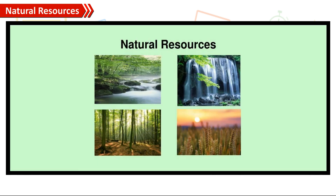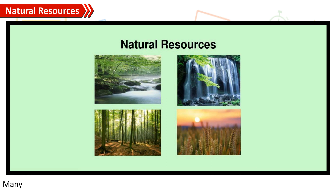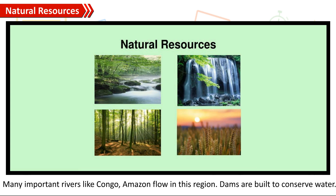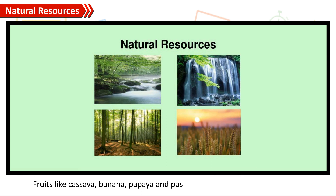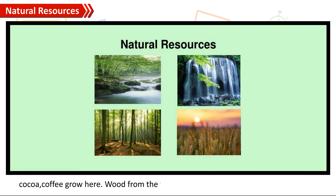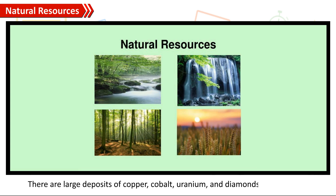The chief natural resources are water, forestry, and mineral resources. A majority of Africans depend on these resources for their livelihoods. Many important rivers like the Congo and Amazon flow in this region; dams are built to conserve water and produce electricity. The forest provides varieties of fruits and nuts, including cassava, banana, papaya, passion fruits, Brazil nuts, okua, and coffee. Wood from the forests is used to make furniture, for shipbuilding, house construction, making paper, matches, and packing cases. There are also large deposits of copper, cobalt, uranium, and diamonds in this region.